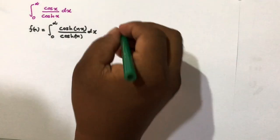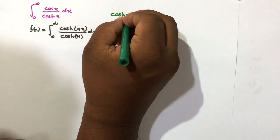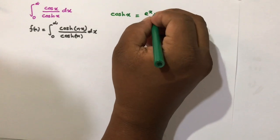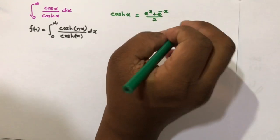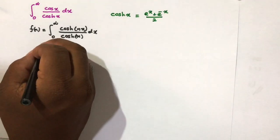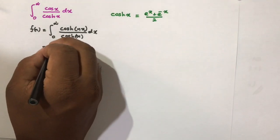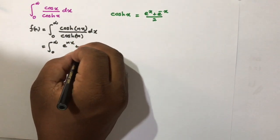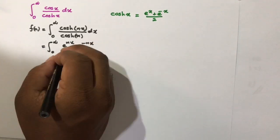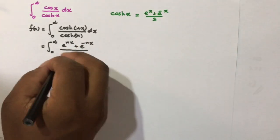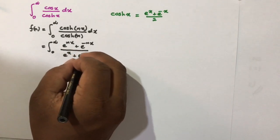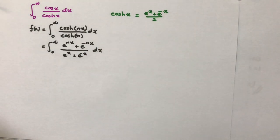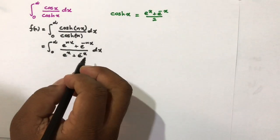We know the definition of the hyperbolic cosine: cosh(x) equals (e^x + e^{-x}) / 2. So we can substitute here: from 0 to infinity, cosh(nx) becomes (e^{nx} + e^{-nx}) / 2, and the 2s cancel, leaving e^x + e^{-x} in the denominator dx.